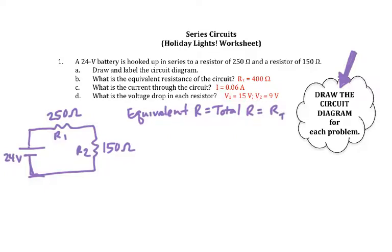If you look at your series formulas, you see that the formula for equivalent resistance is RT equals R1 plus R2. Your formulas say plus R3 dot dot dot - that just means add as many resistors as there are in the problem. In this case we have two resistors, so we're just going to add the two up.